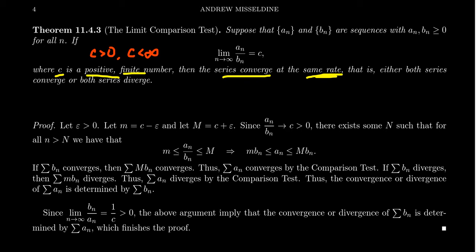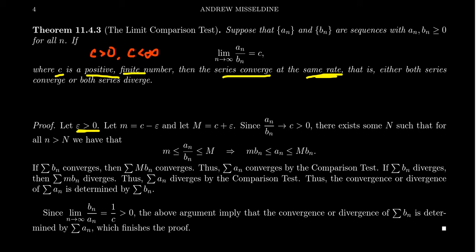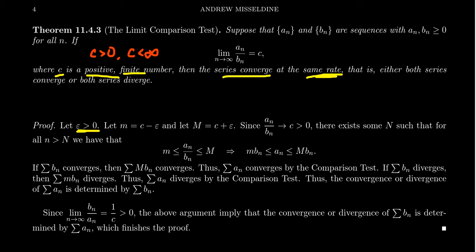Let's see a quick argument for why the limit comparison test works. Take any epsilon greater than zero — interpret this as specifying our margin of error, how much error we will tolerate. Whether we need accuracy to 0.1, 0.00001, or 0.0000001 decimal places, we specify our allowance as epsilon, epsilon for error.